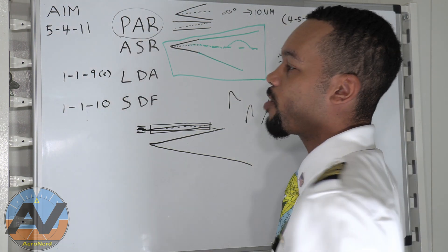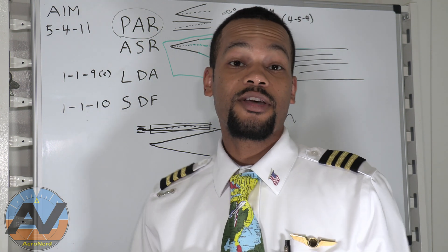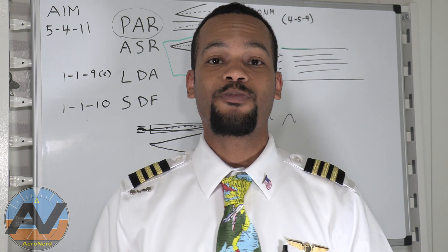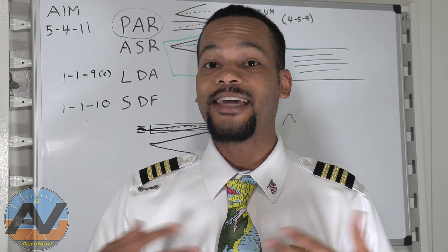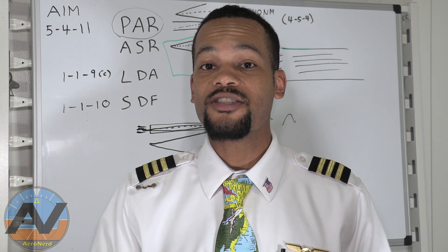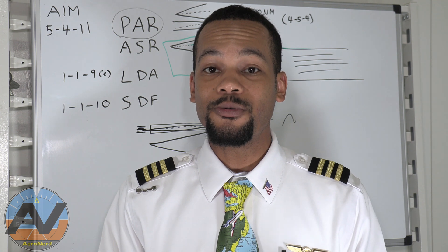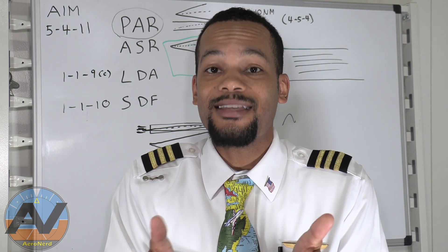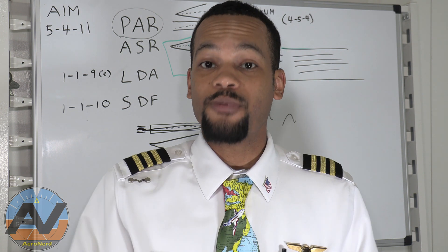So PAR and ASR, what is precision approach radar? What is approach surveillance radar? So what that is, is services provided from the tower, in case you have any kind of instrumentation failures that aren't allowing you to safely descend or maintain the approach path of the final approach course.